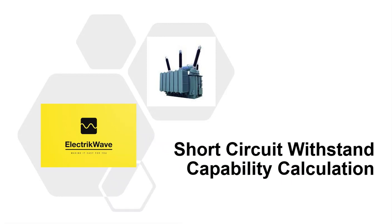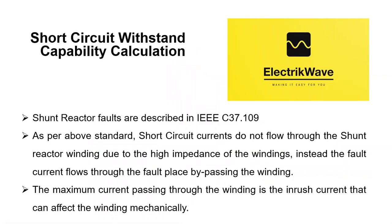Now let's start with a discussion about the short circuit withstand capability calculation for 120 MVAR, 400 kV shunt reactor. Shunt reactor faults are described in IEEE C37.109. As per the above standard, short circuit currents do not flow through the shunt reactor winding due to the high impedance of the windings; instead the fault current flows through the fault place bypassing the winding. The maximum current passing through the winding is the inrush current, which can affect the winding mechanically.